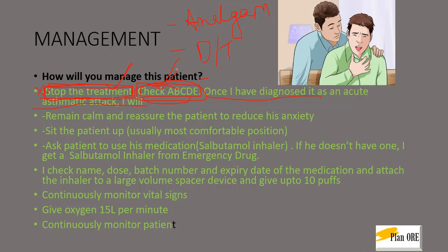After that, you will say you will check ABCDE, and once you have diagnosed it as an acute asthmatic attack you will proceed. Note that ABCDE cannot be checked during an epileptic attack, so you would not say it in that scenario — we'll discuss that when we cover epilepsy. You will remain calm and reassure the patient to reduce his anxiety, and you will sit the patient up in a comfortable position. So the first part is: stop the treatment, check ABCDE, remain calm, and place the patient in a comfortable position.